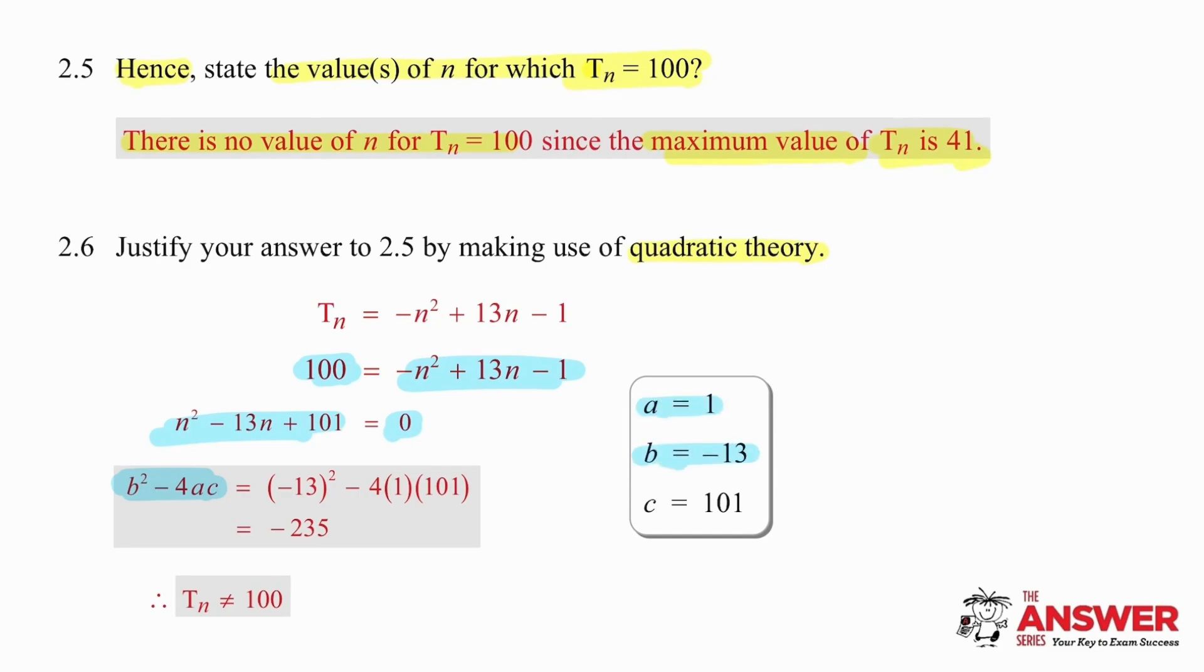Work out that a equals 1, b equals minus 13, and c equals 101. Using those values, carefully substituted into b squared minus 4ac, we get a result of negative 235. That tells us that delta is negative, which means that the roots are non-real. Hence, T_n cannot be equal to 100.